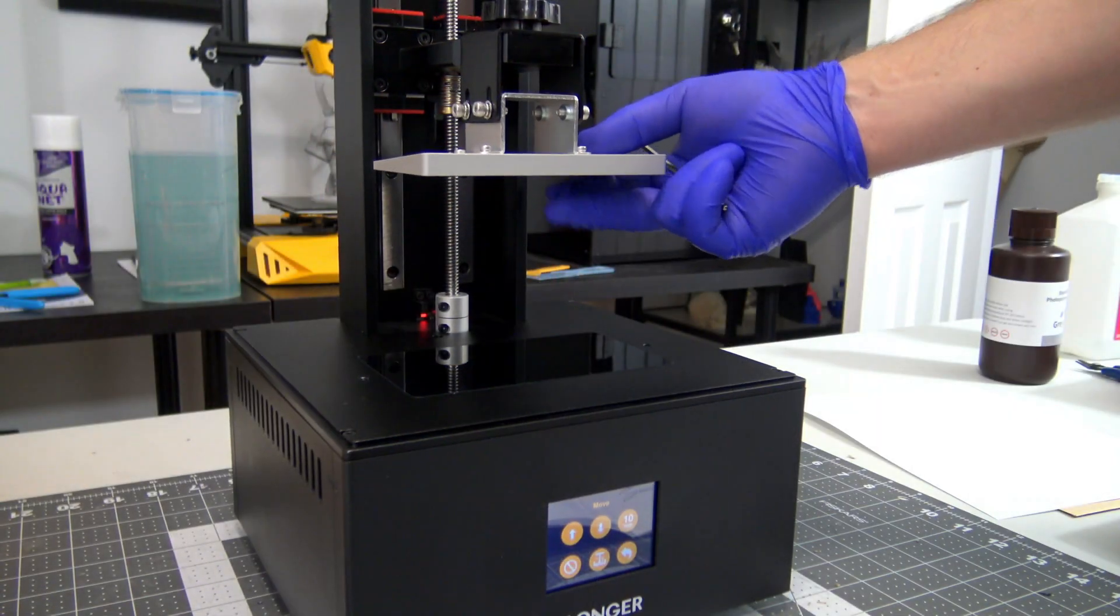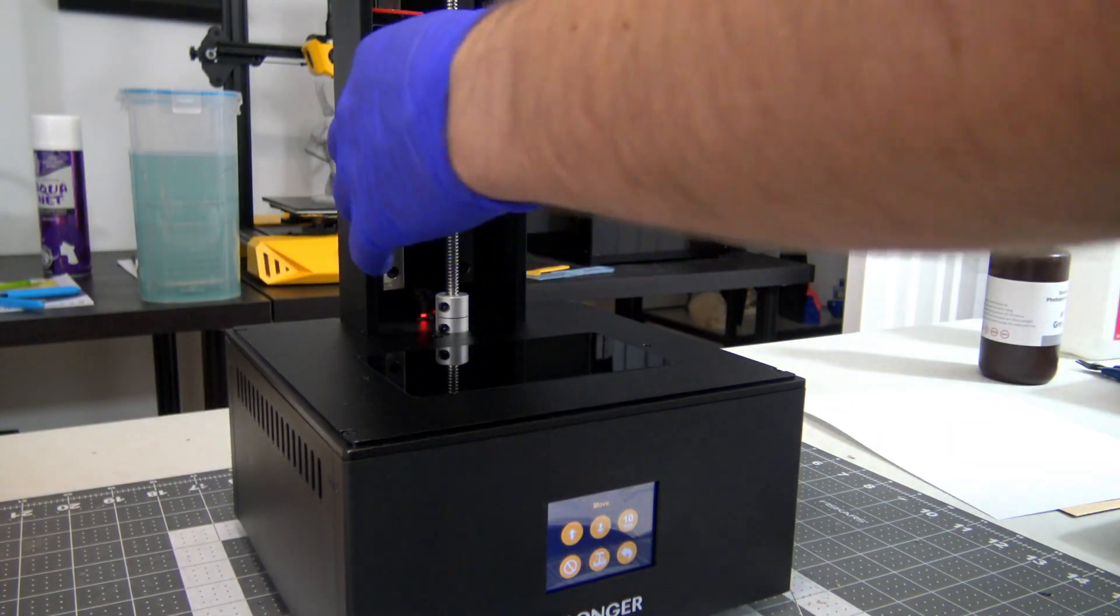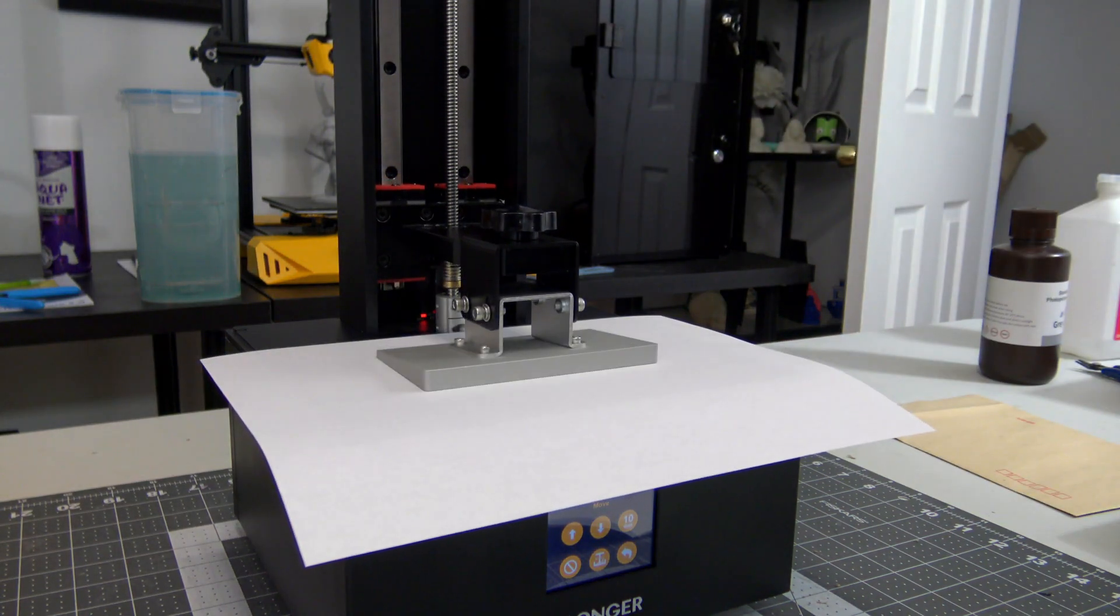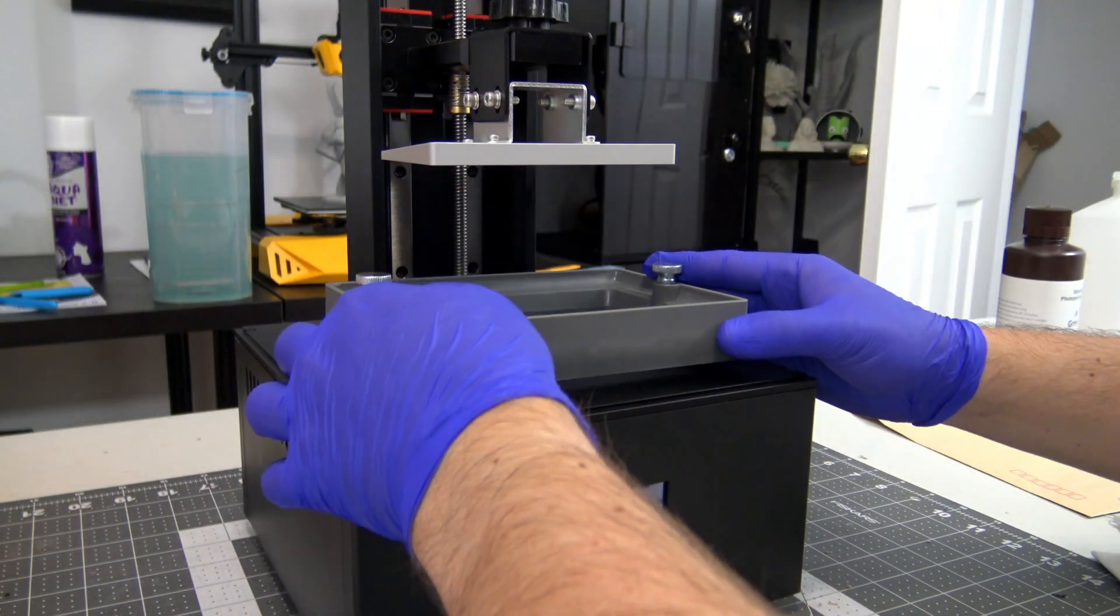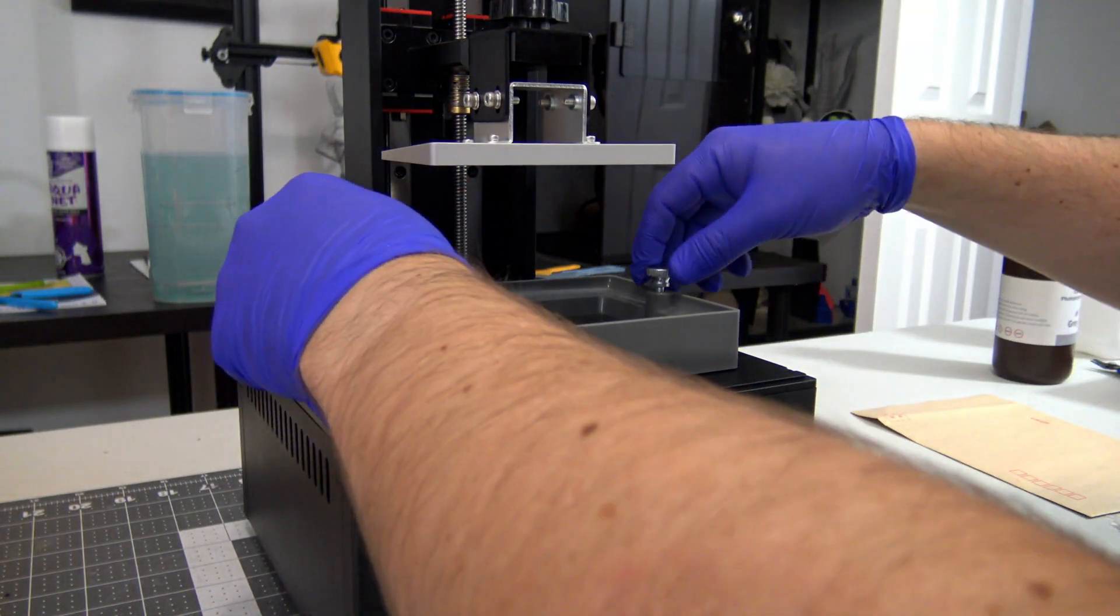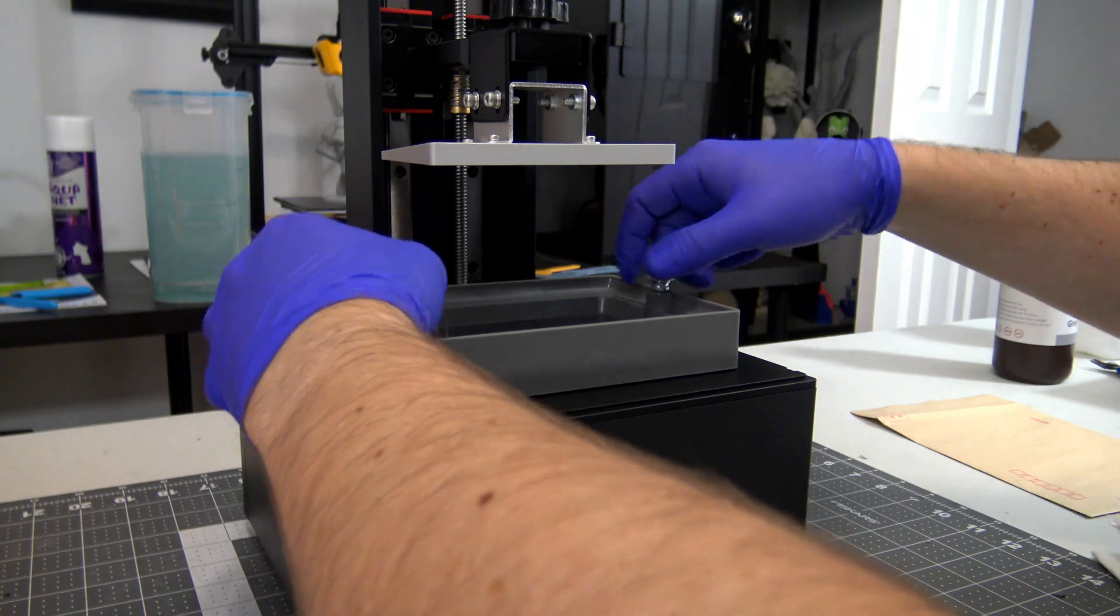Bed leveling was easy. Unscrew the four screws on the bed so that it can move freely, place a sheet of normal printer paper over the LCD, then lower the bed to its home position. Tighten the screws, and the bed is now leveled. Replace the resin vat, pour in some resin, and start printing.